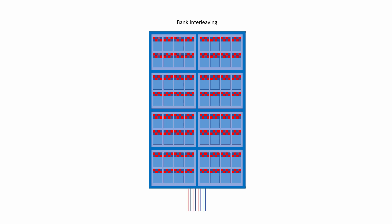As soon as one bank has delivered a burst, another burst can begin immediately from the next bank, then the next, and then the next. While one bank is pumping out data, the others can be getting ready to do it again. By the time the last bank in the chip has completed a burst, the first bank has had plenty of time to recover. Bank interleaving therefore allows the data bus to operate at very high speeds and, most importantly, to remain saturated during prolonged read and write operations.